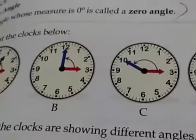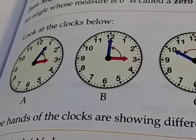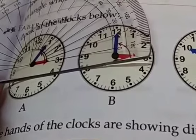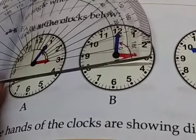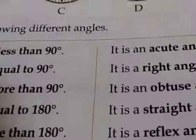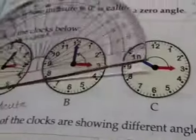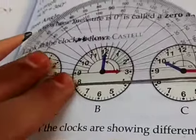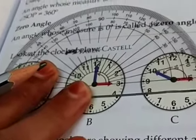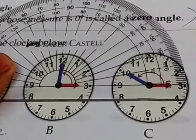Let us look at the clocks here and tell which angle each one is. Clock A — I am placing the protractor on the origin, that is on the red line. I get 30 degrees there, which is less than 90 degrees, so it is an acute angle. Next, clock B — I have it exactly on 90 degrees, so I can tell that it is exactly 90 degrees, so it is a right angle.